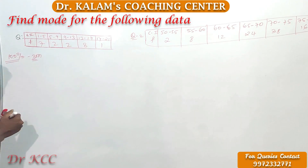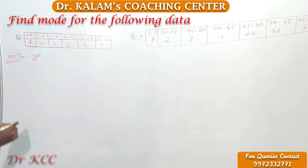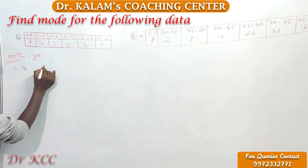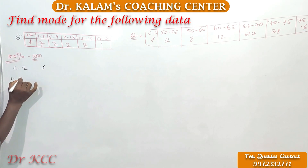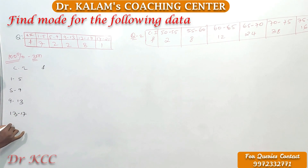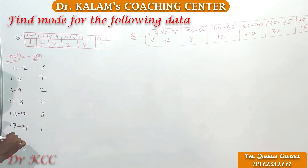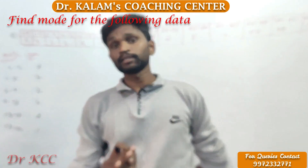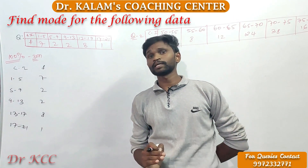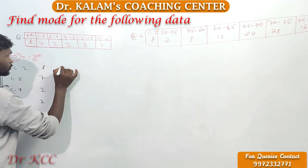So find the mode for the following data. First, rewrite the problem. Take your class interval, then take your frequency. Class interval: 1 to 5, 5 to 9, 9 to 13, 13 to 17, 17 to 21. Frequency: 7, 2, 8, 1. First write the formula — if you lose the formula, you will lose the marks.